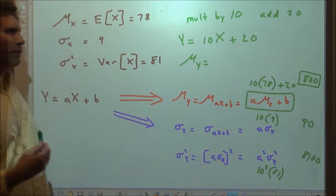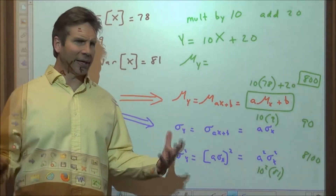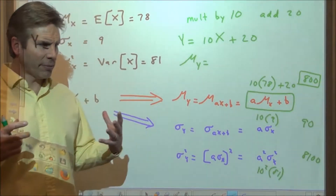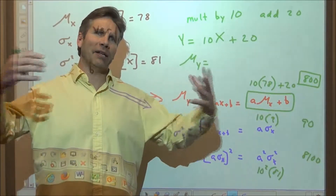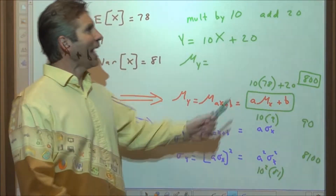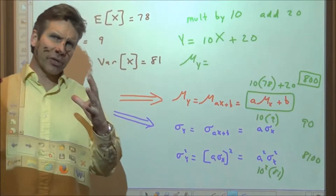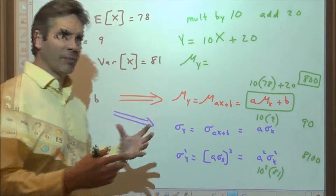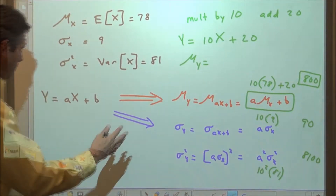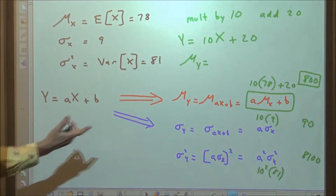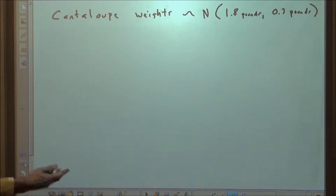The key thing to remember is: when you multiply a variable by a constant, all the measures of center and the measures of spread get that many times bigger. But when adding a value to a variable, only the measures of center are increased — the measures of spread are not. Whether you memorize the formulas or really understand the concept, go with whichever works for you.